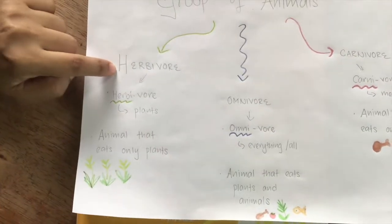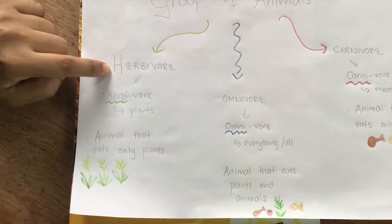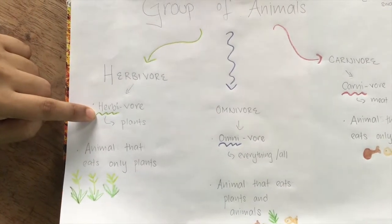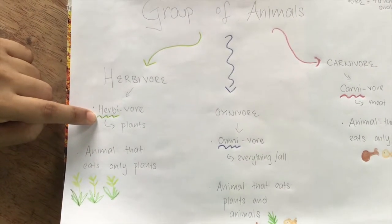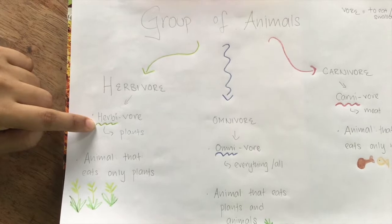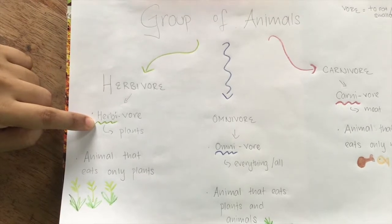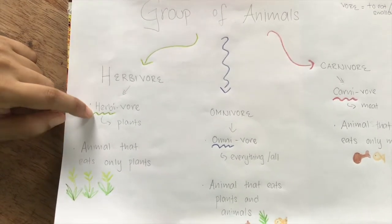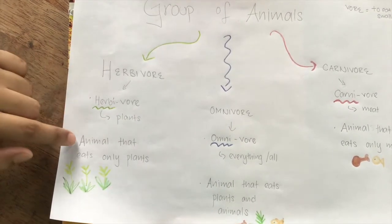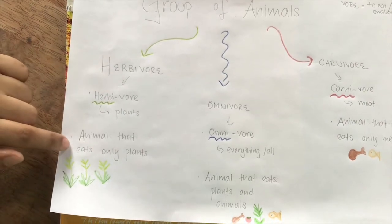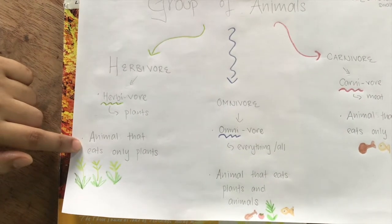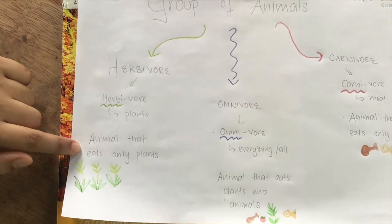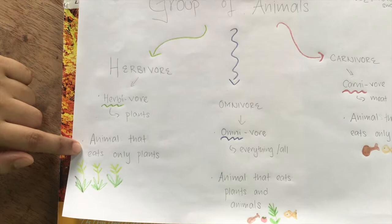Herbivores. What is a Herbivore? 'Herb' means herbs or plants. Herbivore is used to describe animals that eat only plants.